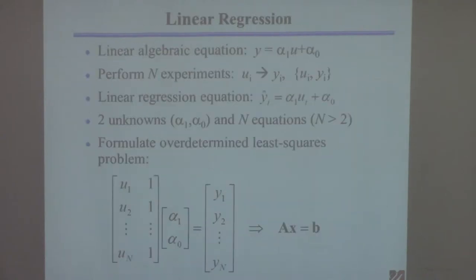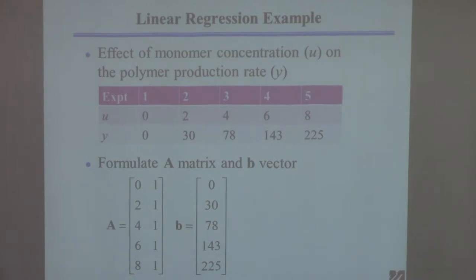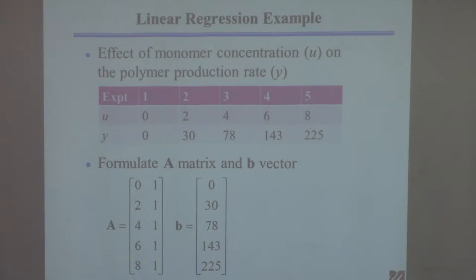Now I'll go through an example. Let's say you're making a polymer — polyethylene — and you want to change the monomer concentration across a series of five experiments and measure the resulting polymer production rate, then relate the two. You perform these different experiments and want to see if this can be fit by a linear model, with U as the input and Y as the output.